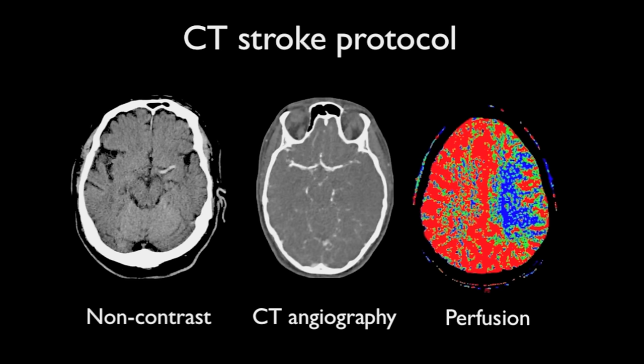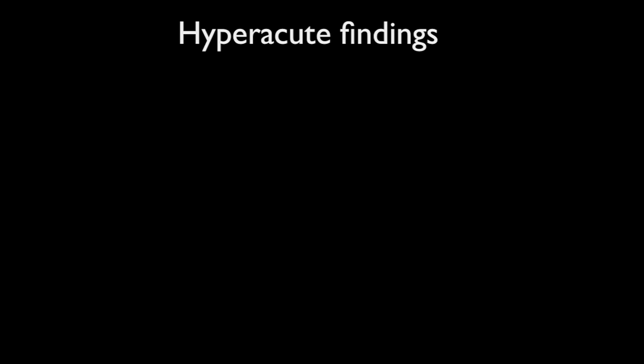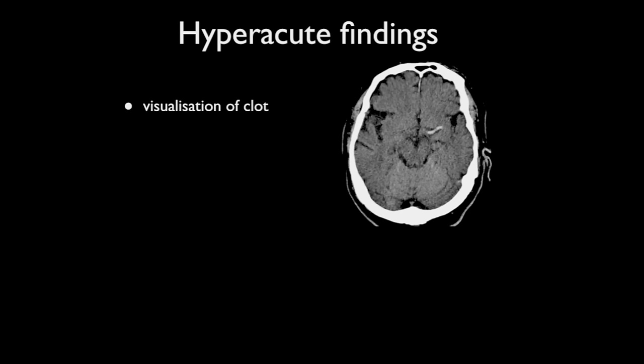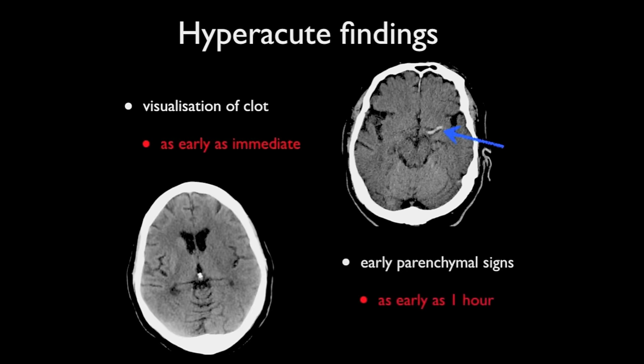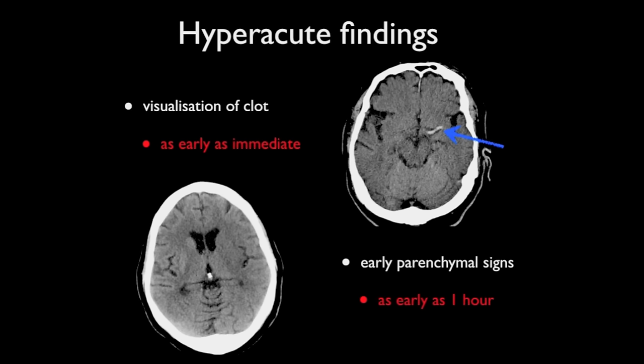Let's focus on the hyperacute findings in ischemic stroke. This can be divided into two main sections: direct visualization of the clot or embolism, which can be seen immediately, and early parenchymal changes, which can be seen as early as within one hour of onset of symptoms.